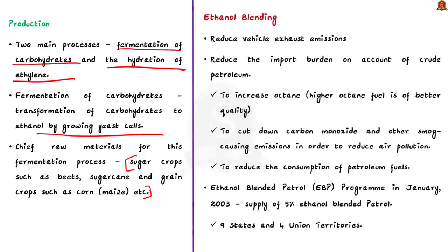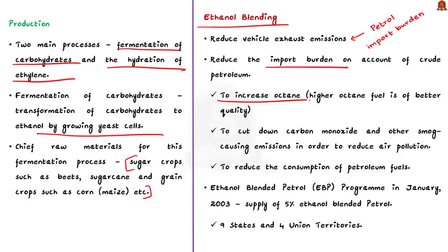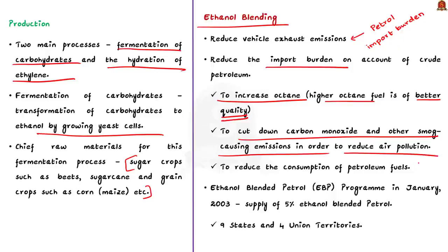Many countries including India have adopted ethanol blending in petrol to reduce vehicle exhaust emissions and to reduce the import burden on account of crude petroleum. Ethanol is used as a blending agent with petrol to increase octane — higher octane fuel is of better quality. It is also used to cut down carbon monoxide and other smog-causing emissions to reduce air pollution, and to reduce the consumption of petroleum fuels.